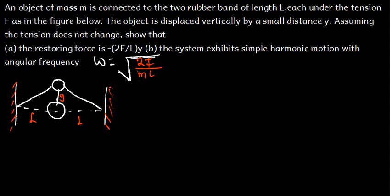In this tutorial, we are going to talk about waves. The question states: an object of mass M is connected to a rubber band of length L under tension F. The object is displaced vertically by a small distance Y. Assuming the tension does not change, show that (A) the restoring force equals negative (2F/L)·Y, and (B) the system exhibits simple harmonic motion with angular frequency equal to the square root of 2F over ML.